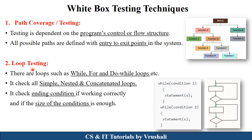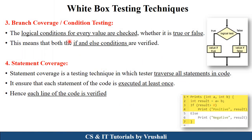The next technique is Loop Testing. In your program, you have different simple, nested, and concatenated loops as per the requirement. The tester checks while loops, for loops, and do-while loops in your program, verifying whether each and every condition is properly mentioned and checking the size of each condition. The next technique is Branch Coverage or Conditional Testing. The tester checks the decision conditions or if-else conditions in your program, verifying whether the if and else conditions generate a proper true or false result.